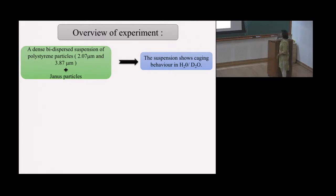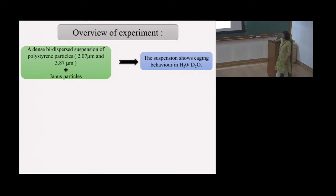We have made dense bi-dispersed suspensions of polystyrene particles in water and D2O. There are two sizes: 2.07 microns and 3.87 microns. We make mixtures of these, and initially when put in water and D2O, nothing happens because at very high concentrations they just show caged motion.